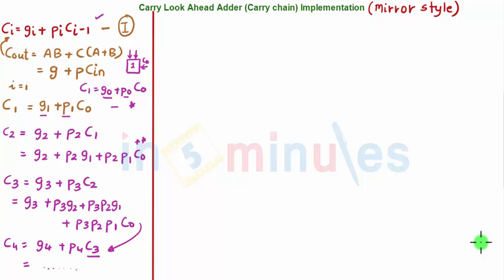we have also seen in the previous clips, where CI is equal to GI plus PI CI minus 1. I have also told you the conventions followed by different authors, but I am going to follow this convention for